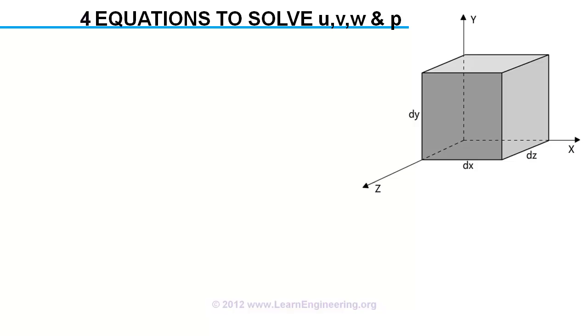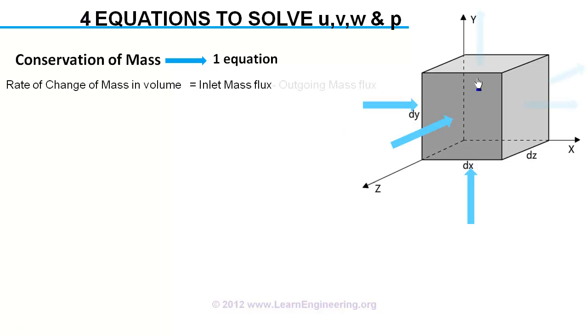To formulate these equations, we will use conservation principles on a small control volume. First principle is conservation of mass. This will lead to one equation where you will say rate of increase of mass at a given point is mass flux in minus mass flux out. It can be represented in differential form like this.